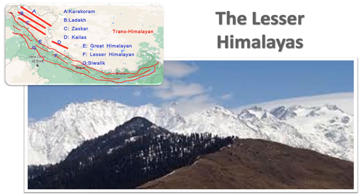The Lesser Himalayas, also known as the Middle Himalayas or the Himachal, lie to the south of the Great Himalayas and are lower than the Greater Himalayas. The Lesser Himalayas are covered with a lot of greenery, and lots of coniferous trees can be found there. These ranges boast some very beautiful hill stations, like Shimla, Mussoorie, Ranikhet, Nainital, and Darjeeling.